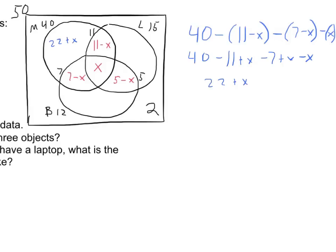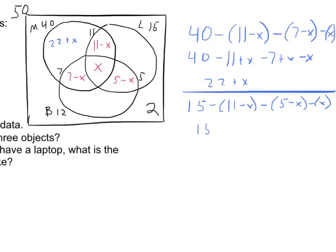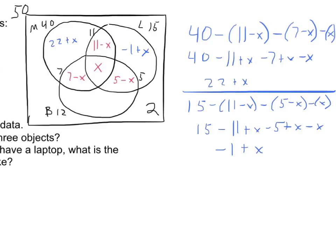Similarly for the laptop-only crescent: 15 minus (11 minus X) minus (5 minus X) minus X, which simplifies to negative 1 plus X. And working through the bike-only crescent in the same way, that section turns out to be X.